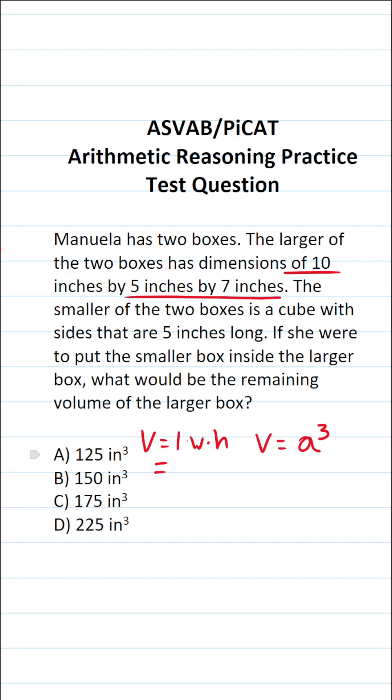All right, so let's calculate these volumes respectively. This one is 10 by 5 by 7, and this volume is going to be... Again, the side length of this box is 5, so A is 5. This is 5 to the third power.